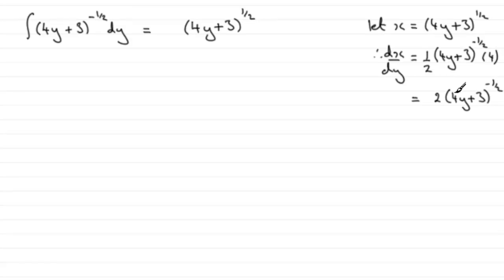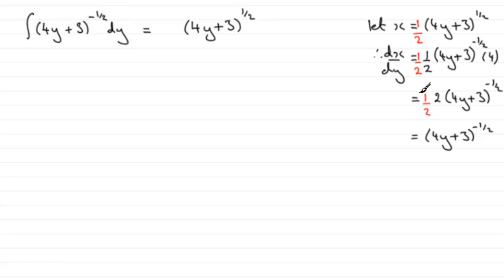If we multiply through by a half — since it's a constant, we're allowed to do this — then half of that 2 leaves us with just 4y plus 3 to the power minus a half. So the integral must have resulted from differentiating a half times 4y plus 3 to the half. We can put a half in there, and don't forget your constant of integration plus c. That's how we do it by recognition.